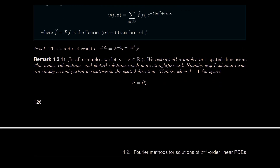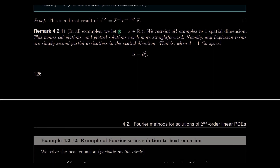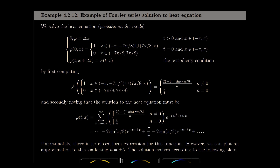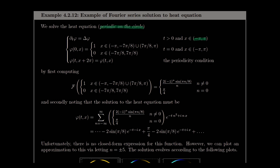Let's see this in action. I'll let x be a scalar in R, one spatial dimension, so the Laplacian is ∂²/∂x². I'll solve the heat equation periodic on a circle — the one-torus, or [−π, π] with ends connected. The initial condition f(x) equals one when x ∈ (−π, −7π/8), one when x ∈ (7π/8, π), and zero everywhere else. Let's draw that: it's a function that equals one near ±π and zero in between — a periodic step function.